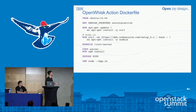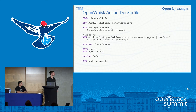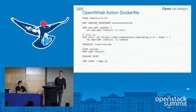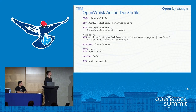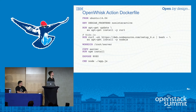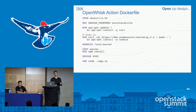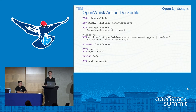On the OpenWhisk side, if you don't want to use the built-in runtimes you can bring your own Docker image and associate that container image with your action in OpenWhisk. The Dockerfile is straightforward — for those familiar with Linux/Ubuntu commands, it grabs Node.js and installs it, sets the working directory context for when the container runs, copies the actual OpenWhisk action Node.js code into the container, then exposes a port and tells Docker how to run the container.